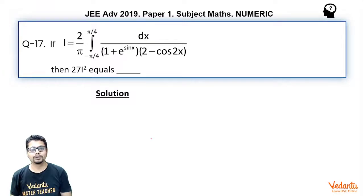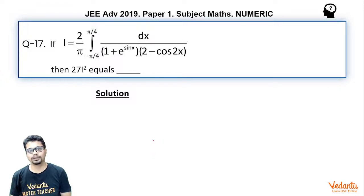If i is equal to 2 by π, integral from −π/4 to π/4, dx divided by (1 + e^(sin x))(2 − cos 2x), then 27i² equals?